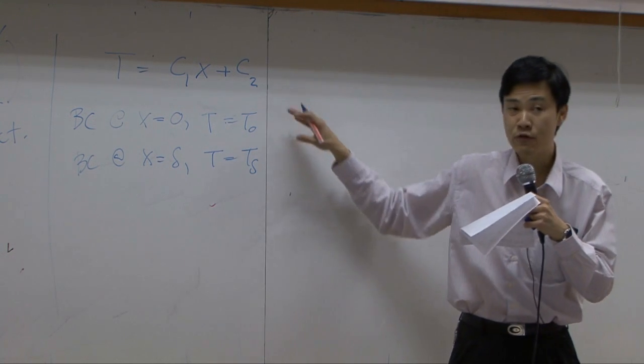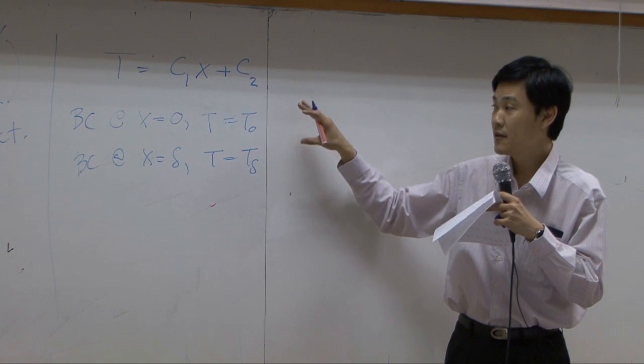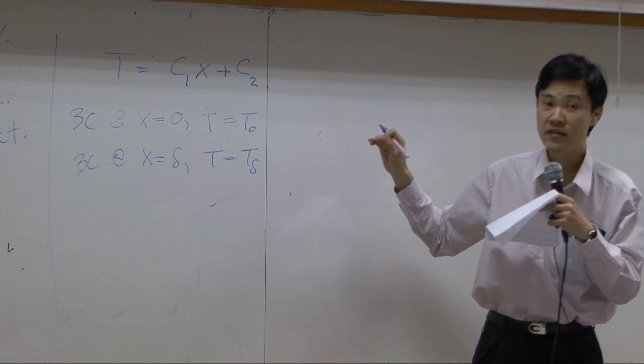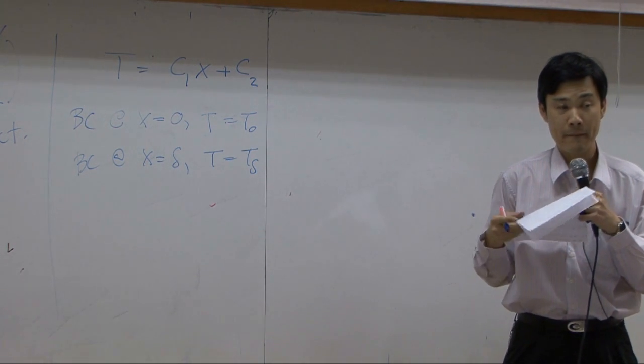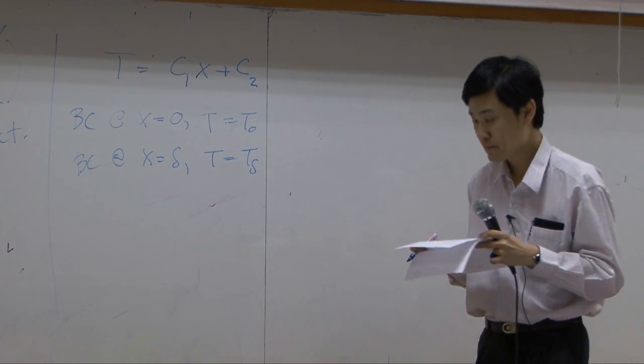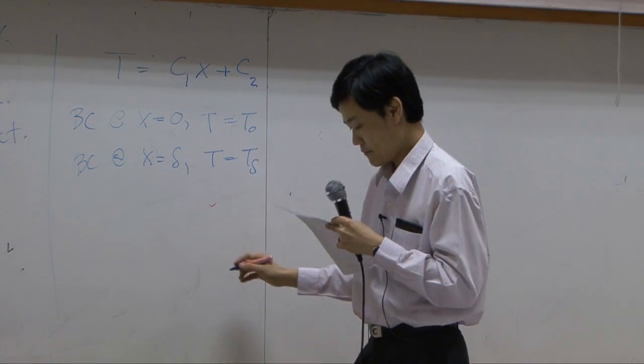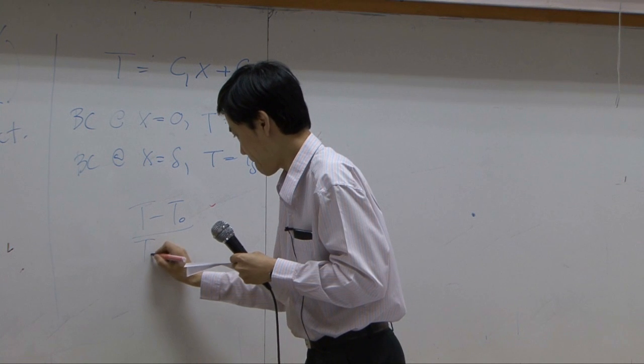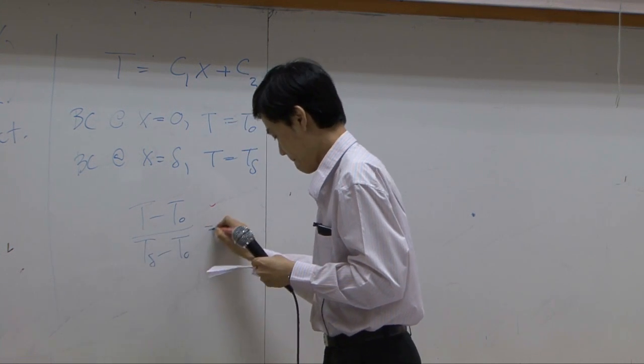So we have two boundary conditions. Put these two boundary conditions back to our original equation. You get temperature profile. I'm very curious.